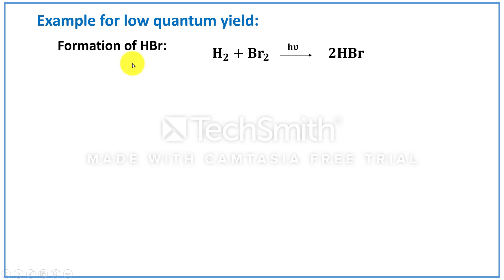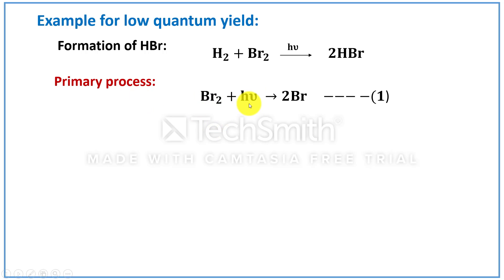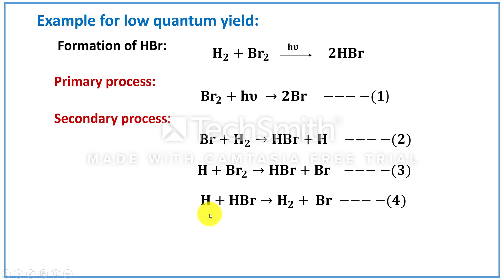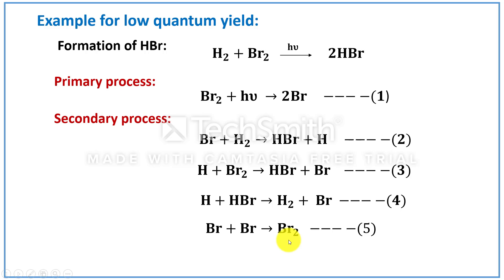Let us see the example for low quantum efficiency: the formation of hydrogen bromide. Hydrogen molecule reacts with bromine molecule in the presence of light to form hydrogen bromide. In the primary process, the bromine molecule absorbs a quantum of energy and dissociates to give two bromine atoms. In the secondary process, bromine atom reacts with hydrogen molecule to form hydrogen bromide and hydrogen atom. This hydrogen atom reacts with bromine molecule to form hydrogen bromide and bromine atom. In the next step, hydrogen atom plus hydrogen bromide gives hydrogen molecule plus bromine atom.